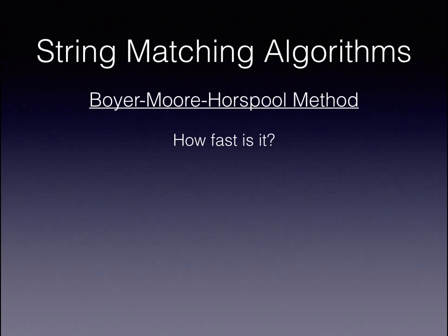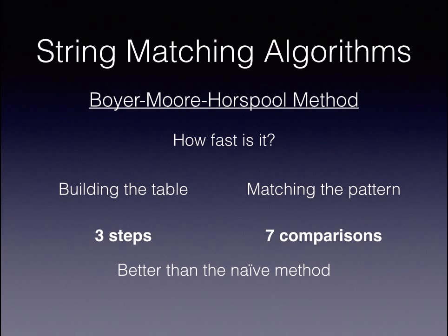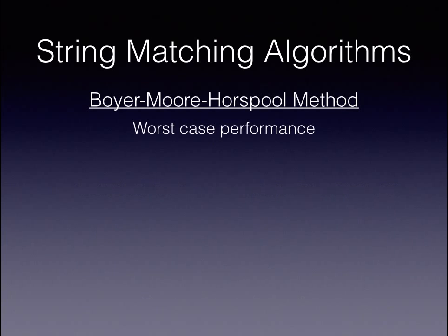So, how fast is this algorithm? Well, we now have two parts to consider. The first is building the table, which takes three steps, and the second is matching the pattern, which is a total of seven comparisons. It's clear that this is better than the naive method by eight comparisons, but how much better on worst-case performance?